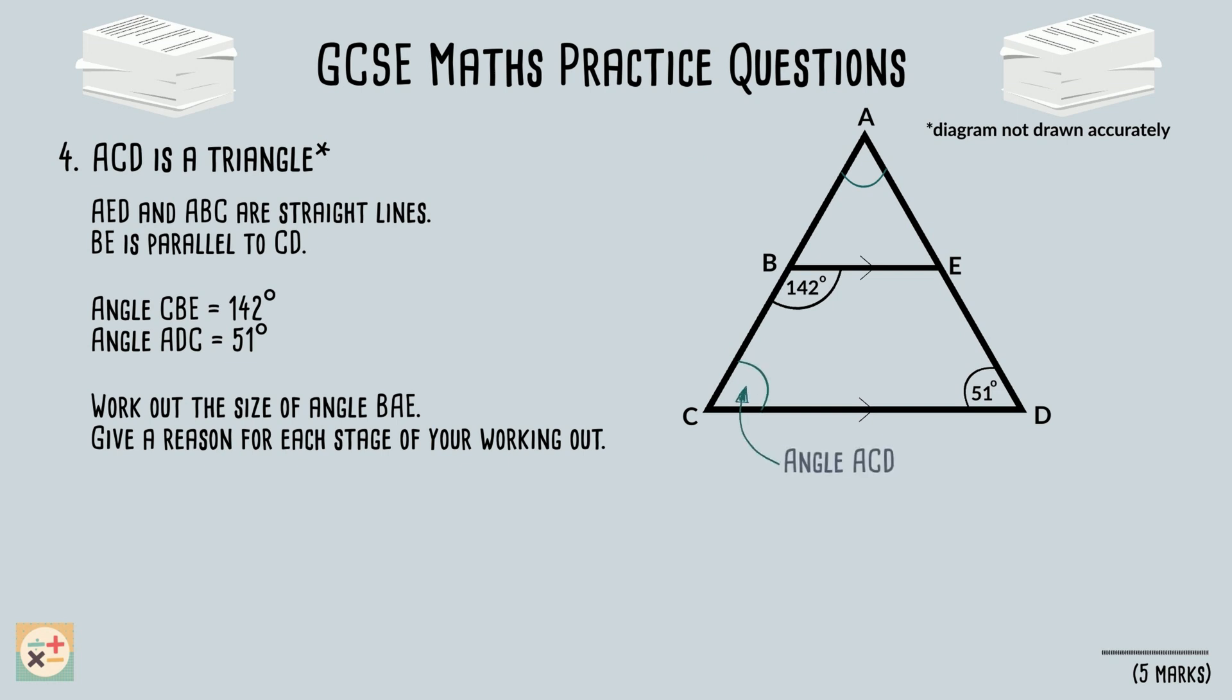Starting with this angle, we know that allied angles, also known as co-interior angles, add up to 180 degrees. So, we can work out the angle ACD by subtracting 142 from 180. Therefore, angle ACD equals 38 degrees.